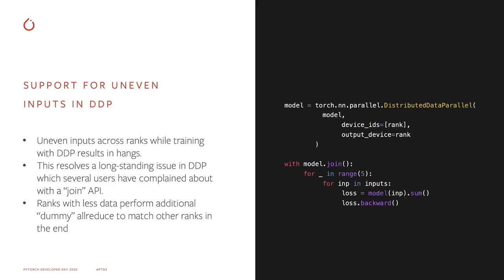The next item is support for uneven inputs in DDP. If you have an uneven number of batches across different ranks, what would typically happen is some ranks which have finished their data would not enter the synchronized gradient call while other ranks still processing data would enter this call. As a result, this leads to either a hang or some sort of timeout — a longstanding issue many PyTorch users have complained about. Now we have a fix: you can use the model.join context wrapper shown in the example here. This ensures that once some ranks are finished with their data, they do dummy synchronized operations to match other ranks still processing data, guaranteeing all ranks complete their processing altogether.